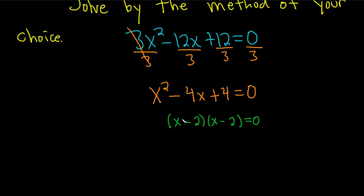One way to check it — the way I typically do it in my head — is I do the middle term. The middle term is negative 2x, the outer term is negative 2x, and if you add them up you get negative 4x, and it does work.